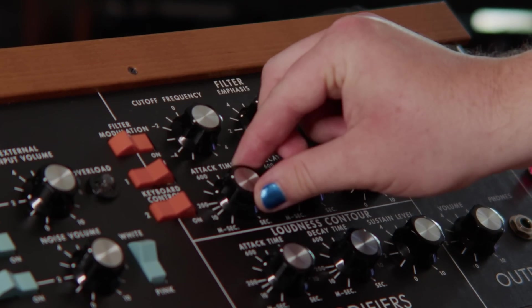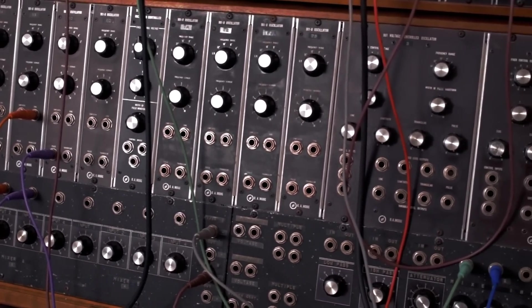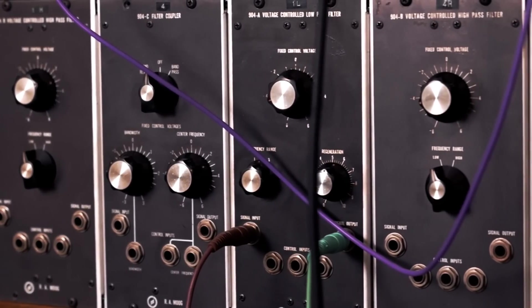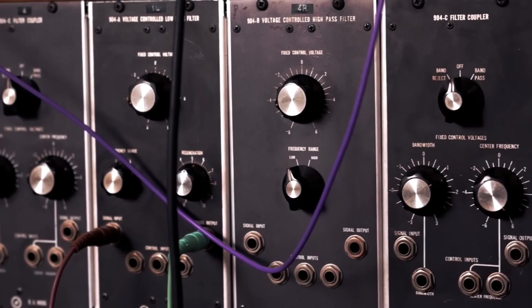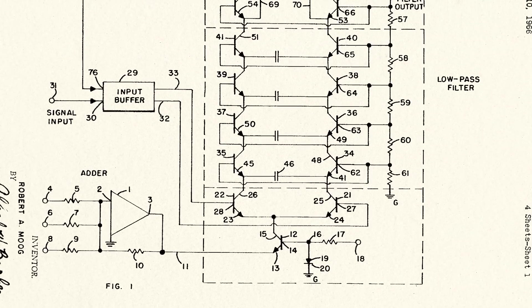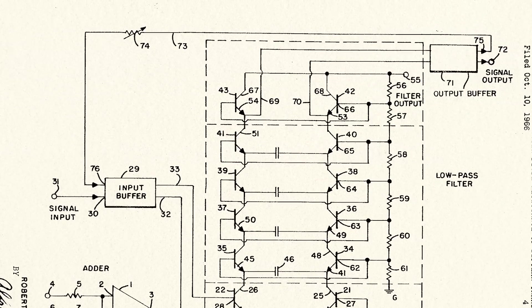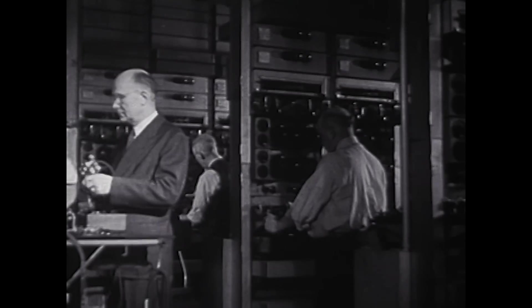In addition to being the first voltage-controlled synthesizer filter, the Moog ladder filter is arguably one of the most pleasing-sounding filters ever made. The initial iteration of this design was the 904 module. The 904 module set was comprised of three modules: a low-pass filter, a high-pass filter module, and a module that connected them in order to create bandpass and notch functionality. The filter topology of the 904 module was that of a ladder filter, and it got its name from the way that the resistors and transistors formed a sort of ladder shape in a schematic.